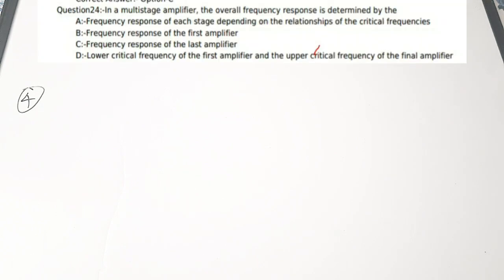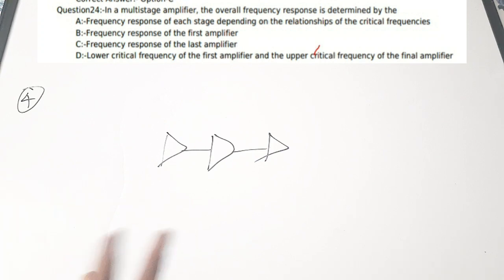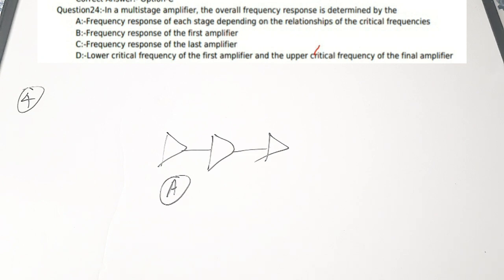Fourth question: in a multi-stage amplifier, the overall frequency response is determined by — A) frequency response of each stage depending on the relationship with the critical frequencies, B) frequency response of first amplifier, C) frequency response of last amplifier, D) lower critical frequency of first amplifier and upper critical frequency of the final amplifier. The correct answer is option A — the total frequency response depends on each stage's frequency response.